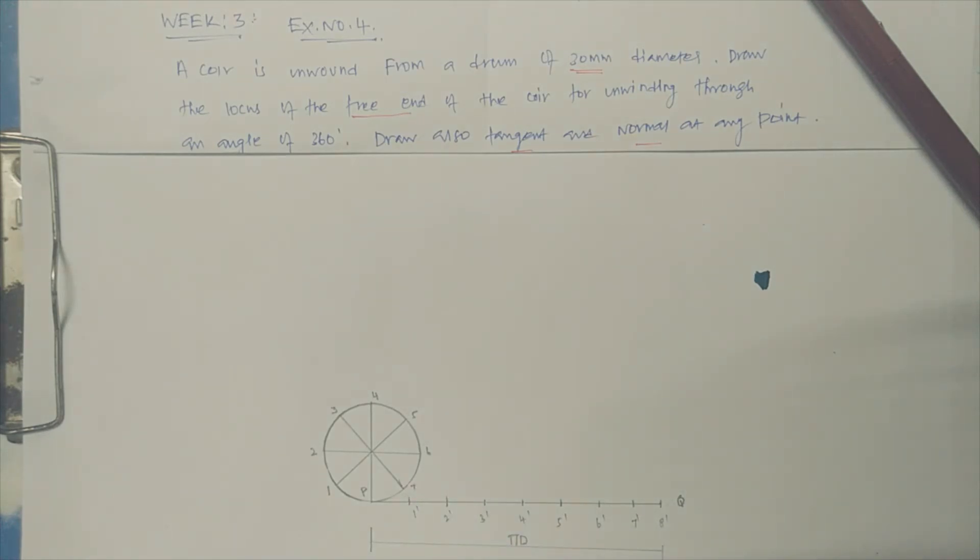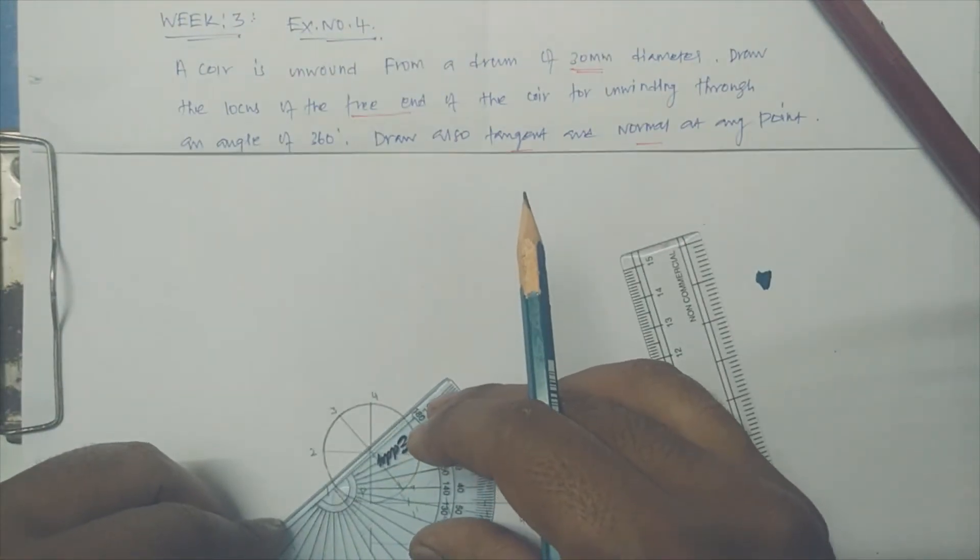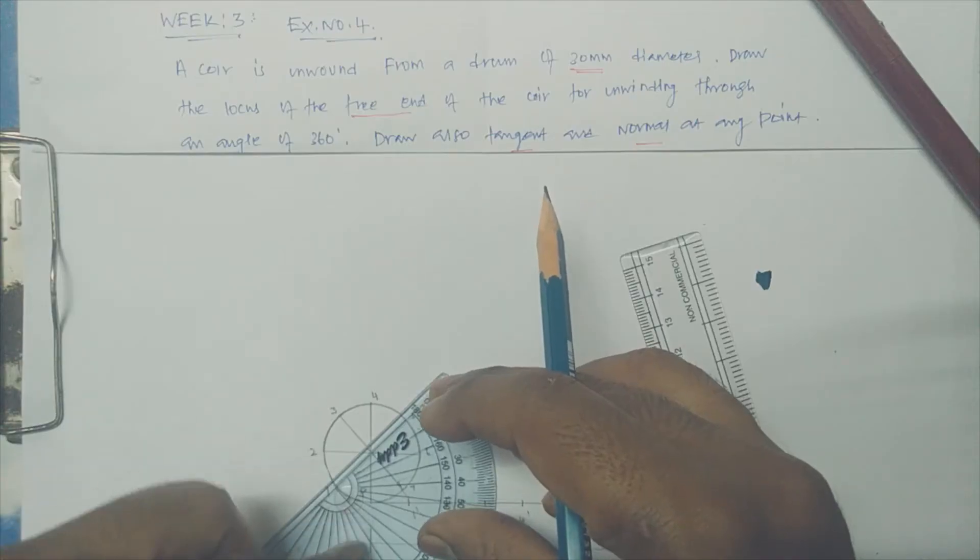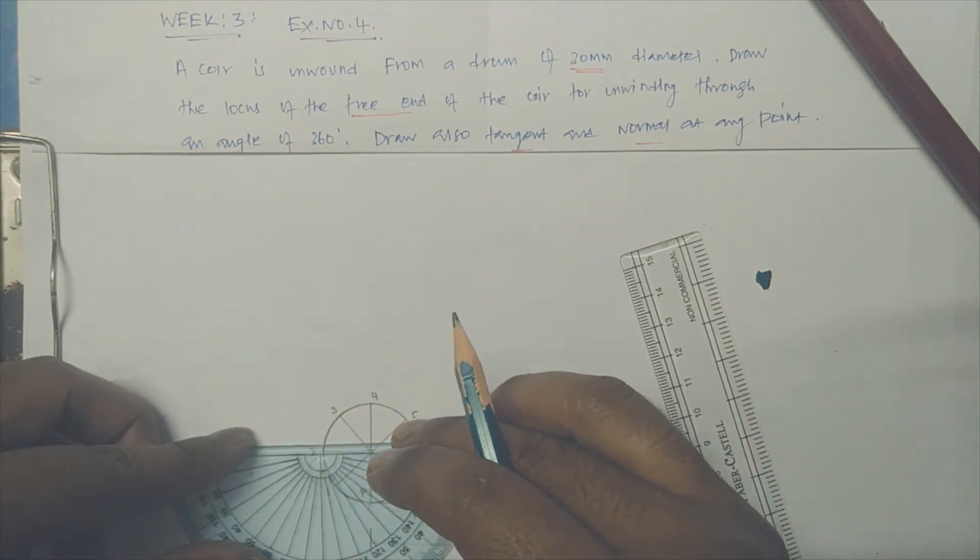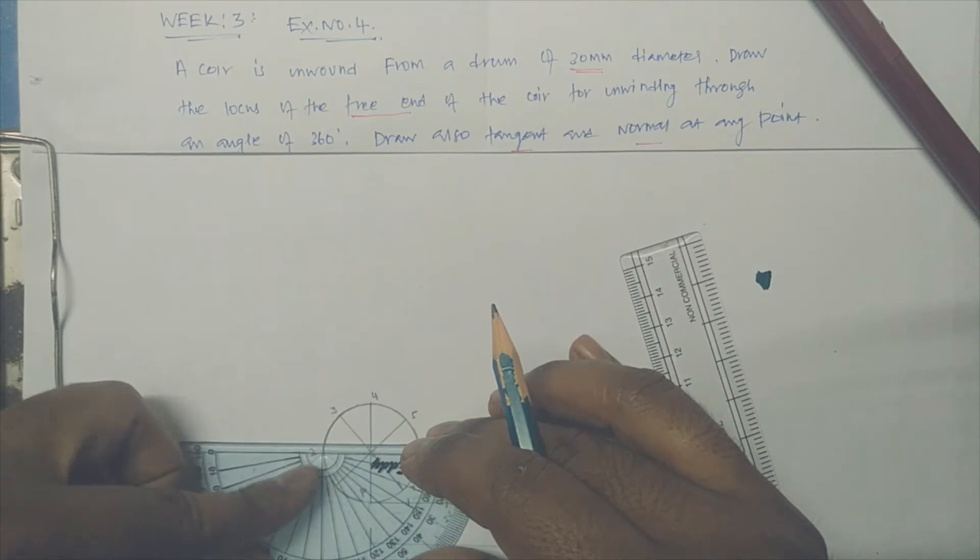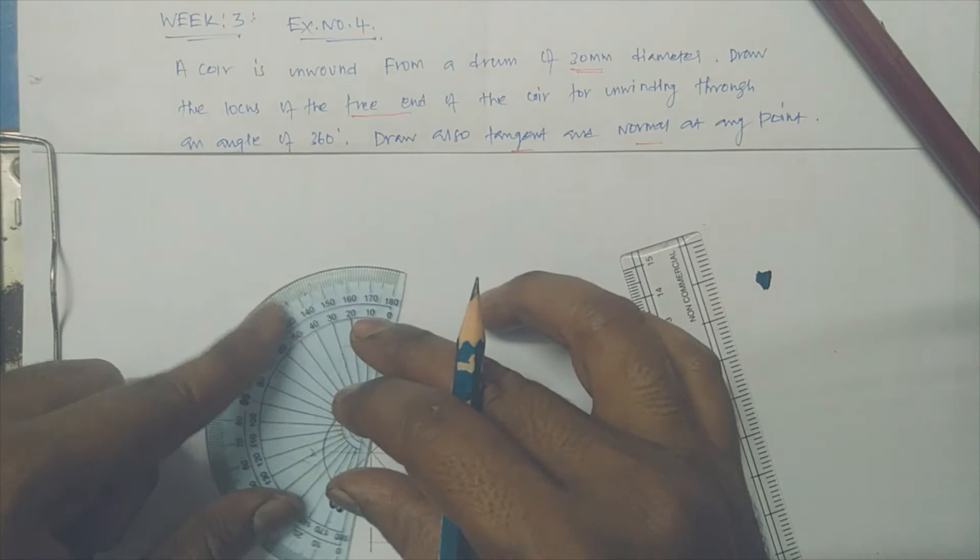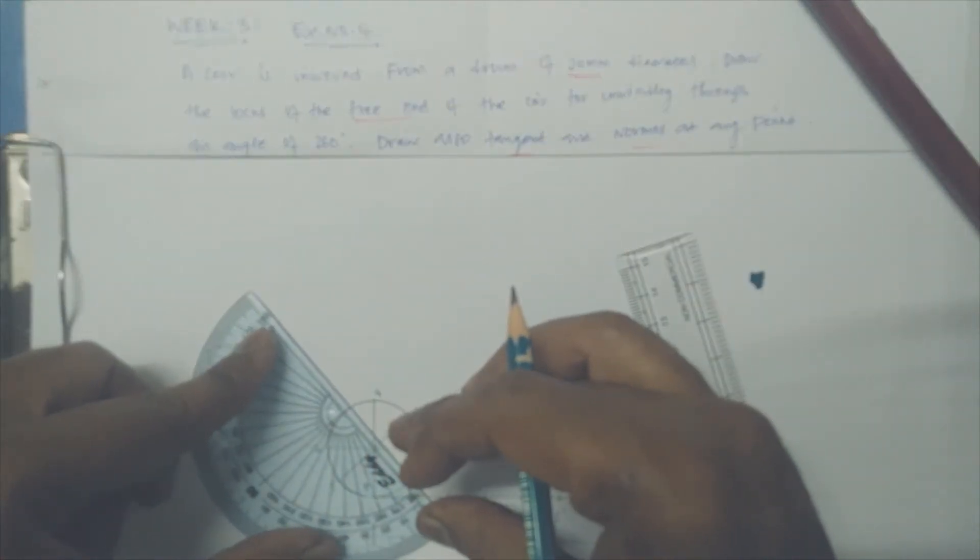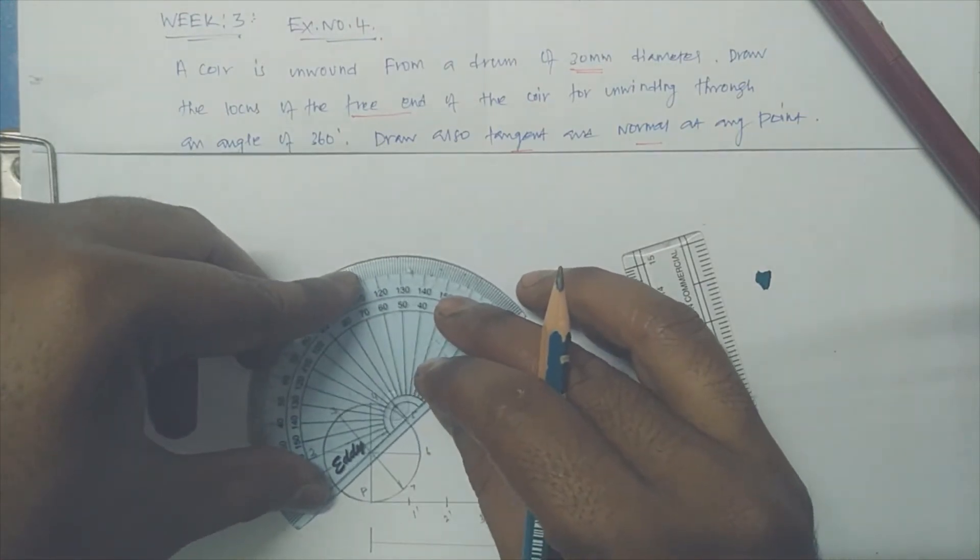The normal line to identify the profile. So let me fix the protractor here. At 1 I am marking the 90 degrees. Similarly I am fixing the protractor here, I am just making 90 degrees.